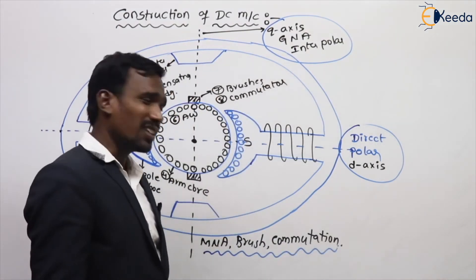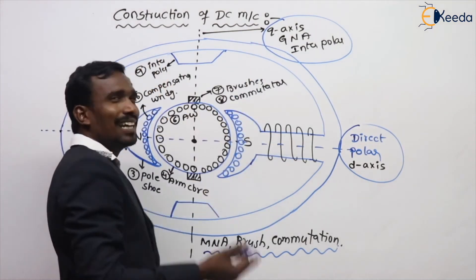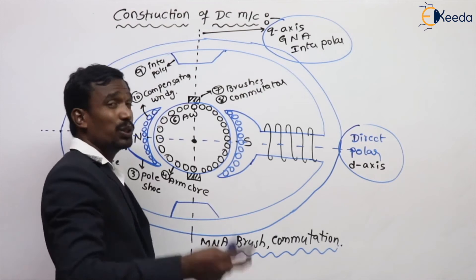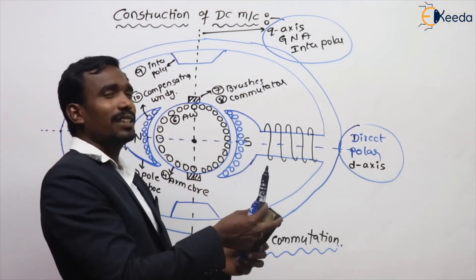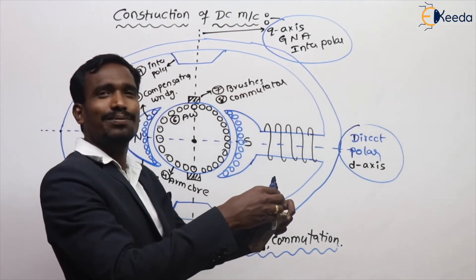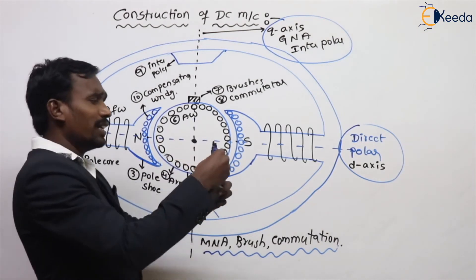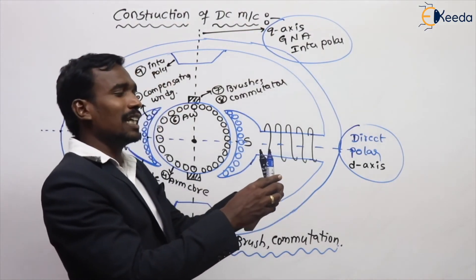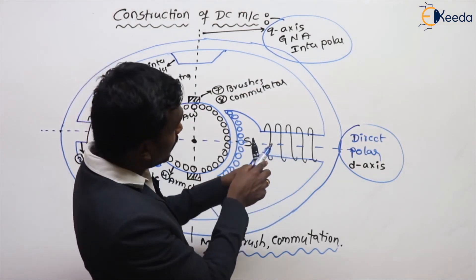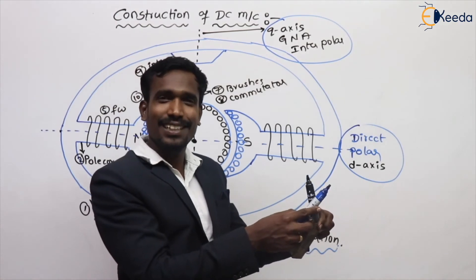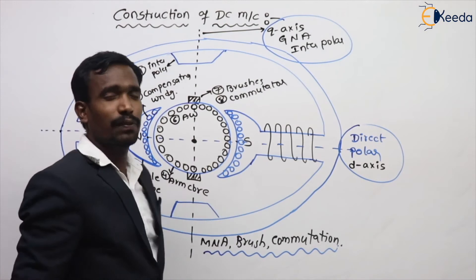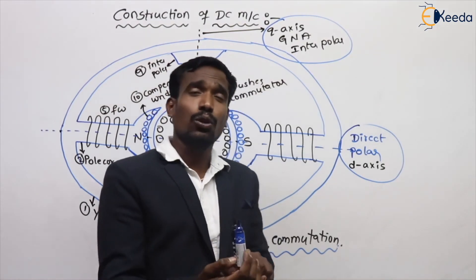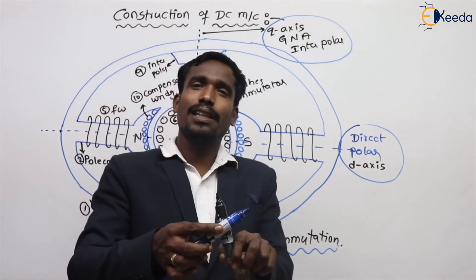Now, GNA and MNA are both the same axis? How can one be fixed and one variable? Actually, we have two axes — GNA and MNA. Under no-load condition, GNA equals MNA and both coincide. But when load is applied, the MNA will shift — not the GNA. So MNA is the variable axis.